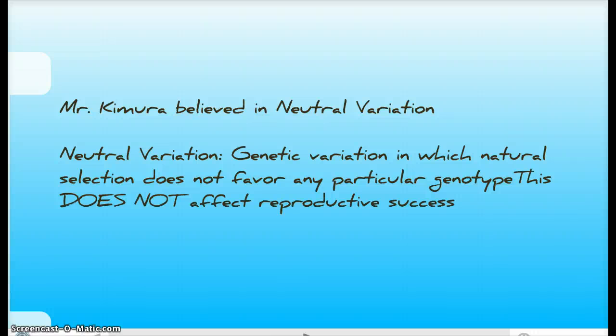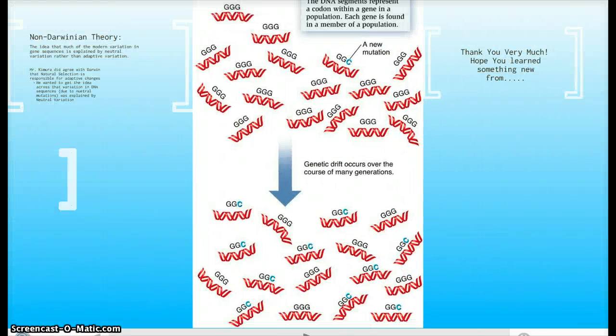So this is an example of neutral mutations. As you can see, in the beginning all these GGG codons are normal, and then a mutation occurs where the last G nucleotide turns into a C.